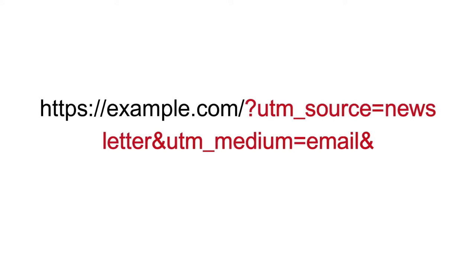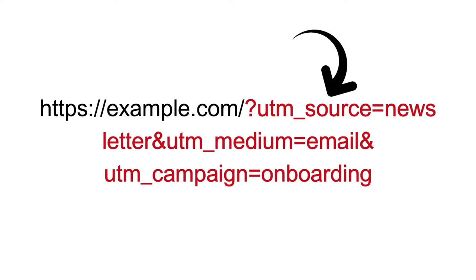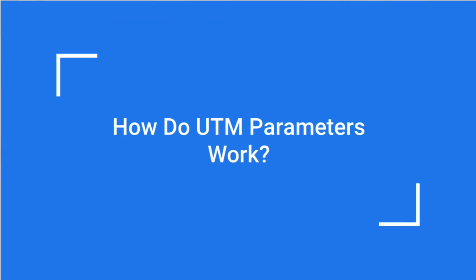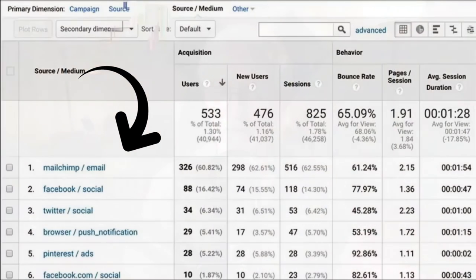UTM, or Urchin Tracking Module parameters, are also called UTM tags or codes. They're just small bits of code that you can add to the end of a standard URL to track clicks on specific links. The URLs containing a UTM code work just like any other clickable link. Google Analytics uses those codes to differentiate and track each URL, and then it gathers data like the number of visitors, traffic sources, conversions, and more.